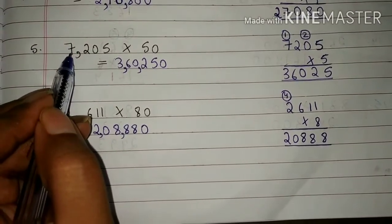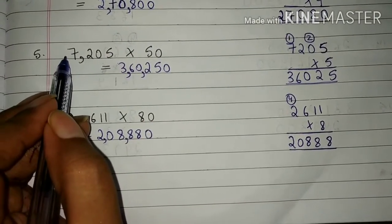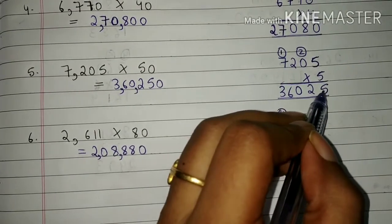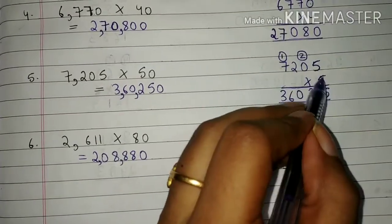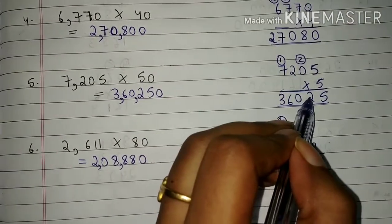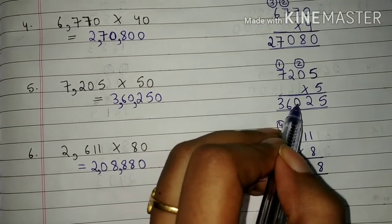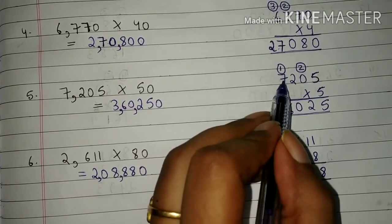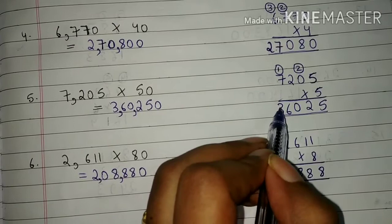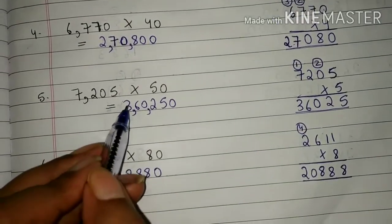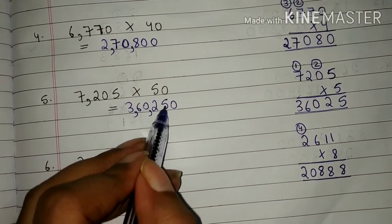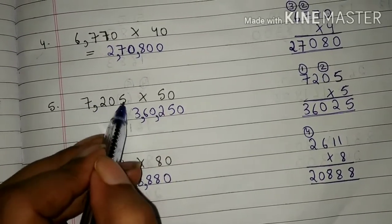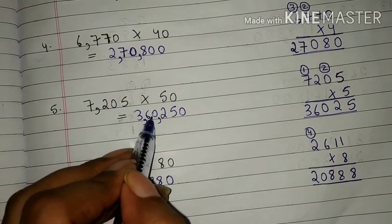5th question: 7,205 into 50. Students, first we will multiply 7,205 by 5. So 5 into 5 is 25. 5 we have written here and 2 will be carry. 5 into 0 is 0 plus 2 is 2. 5 into 2 is 10. 0 we have written here and 1 will be carry. 5 into 7 is 35 plus 1 is 36. Students, 7,205 multiplied by 5 will give 36,025. So students, 7,205 multiplied by 50 will give 360,250.